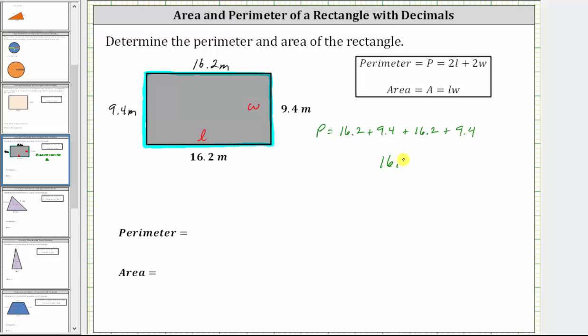We have 16.2 plus 9.4 plus 16.2 plus 9.4. Bring the decimal down into the sum. And now we add, starting with the rightmost place value.